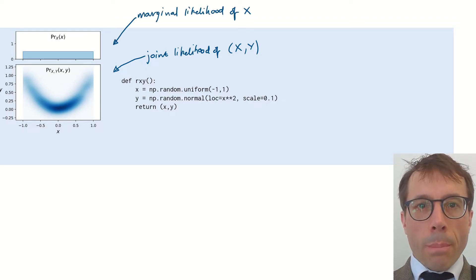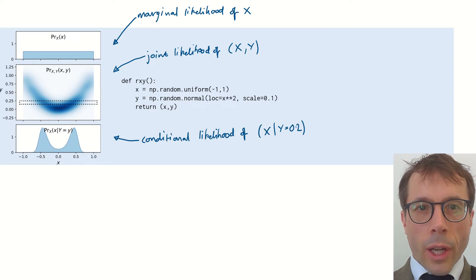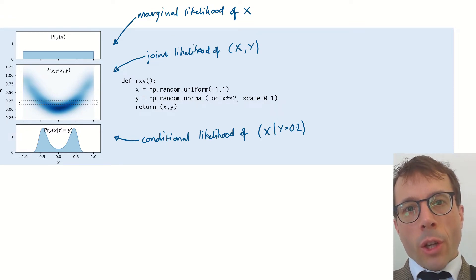Now remember the big idea of conditional distributions. If we take a horizontal slice through the joint likelihood, let's say we take a slice at y equals 0.2, and then we rescale this slice so it integrates to 1, what we get is the conditional likelihood of x, conditional on y equals 0.2. Okay, so that's a refresher about what conditional distributions are. Now let's look at the computational Bayes' method.